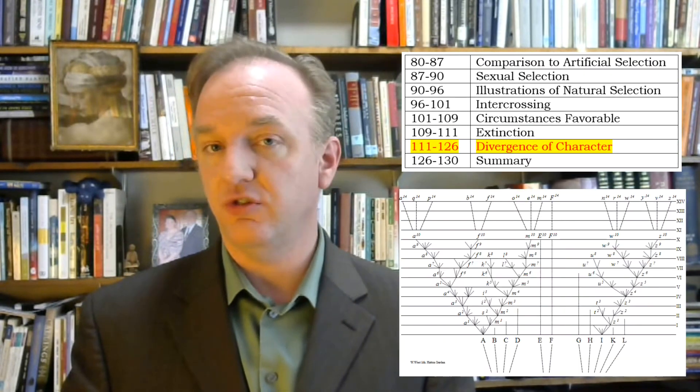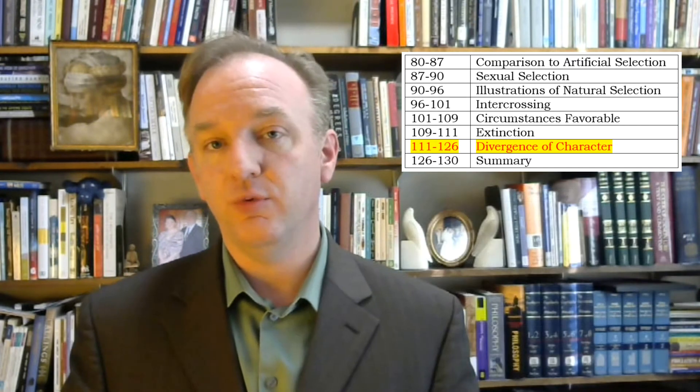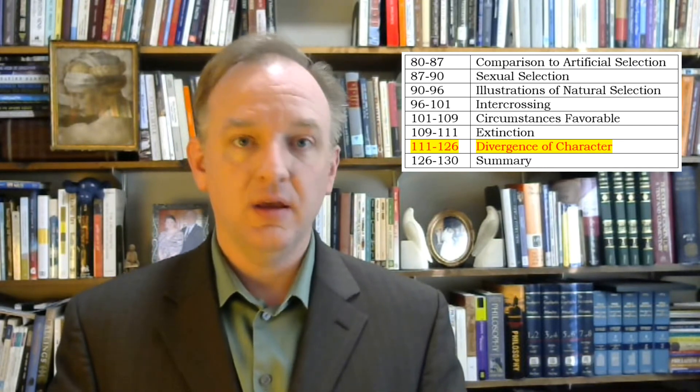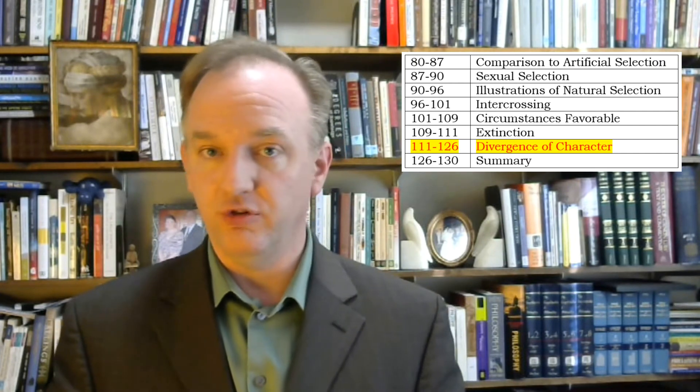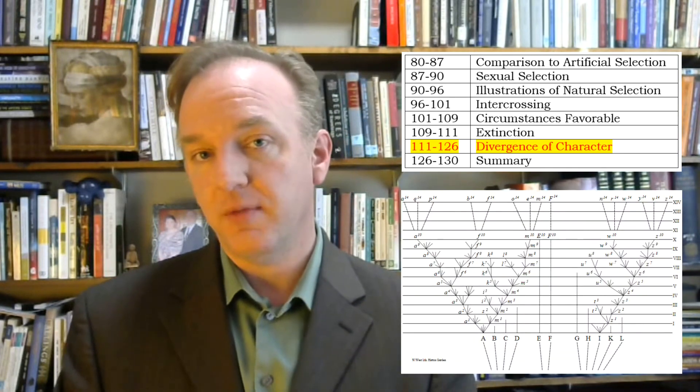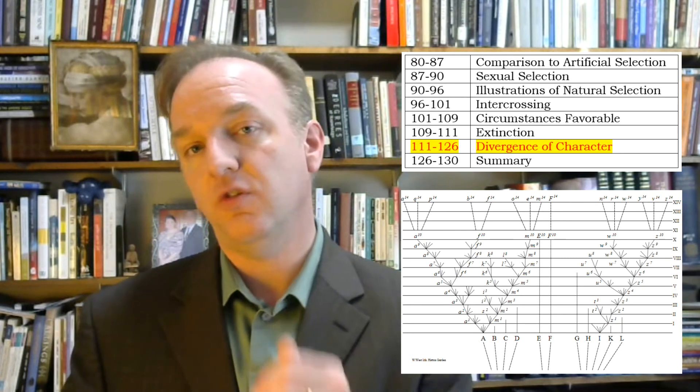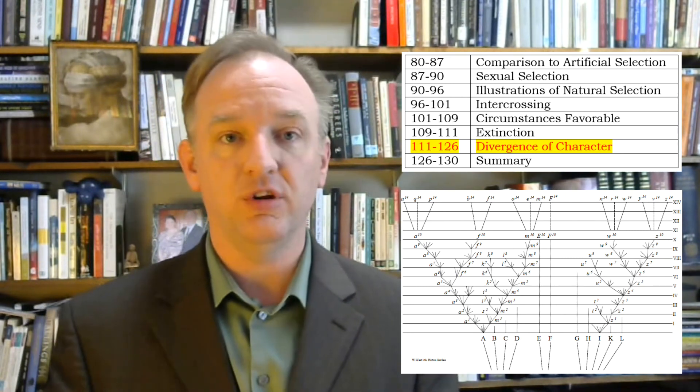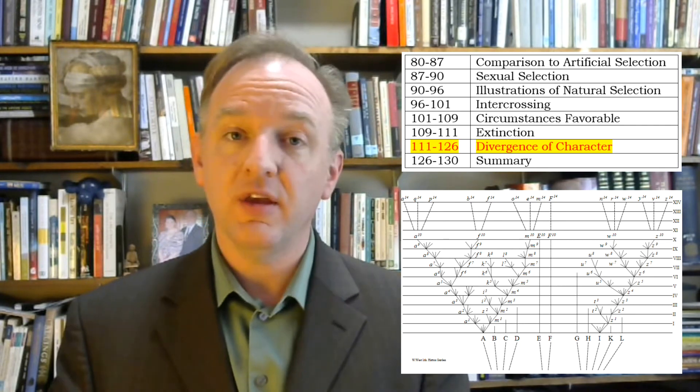The seventh and longest section is sixteen pages and includes the only illustration in the book, which is a chart. It deals with divergence of character — the way competition between similar species eventually produces separate, distinct species. Major points include the mechanism of divergence with examples from nature and from artificial selection, and the benefits of divergence and species diversification, again with many examples. Darwin then explores the way that divergence of character combines with natural selection and extinction, and this is where he uses his chart. The remainder of this section, from pages 116 to 126, along with the included chart, to which it frequently refers, is worth your careful attention.